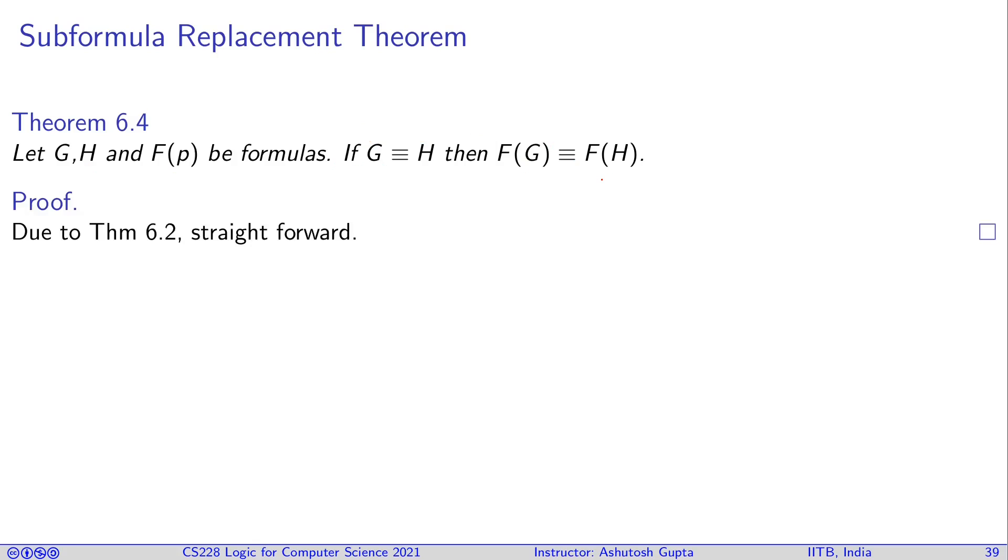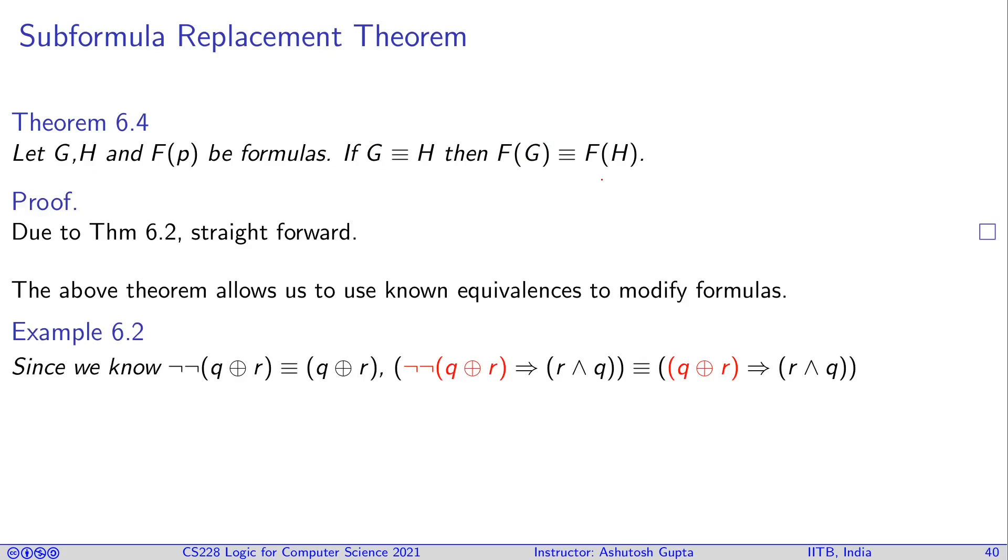The above theorem allows us to use known equivalences to modify formulas. In the previous example, we came up with this equivalence. Now if I know these two formulas are equivalent, wherever I see this in a formula, I can replace it with this formula and get a substitution. We did prove this exact theorem in the previous lecture using the proof system. Now we're using pure semantics and ignoring the proof system altogether. Both are valid ways of working.